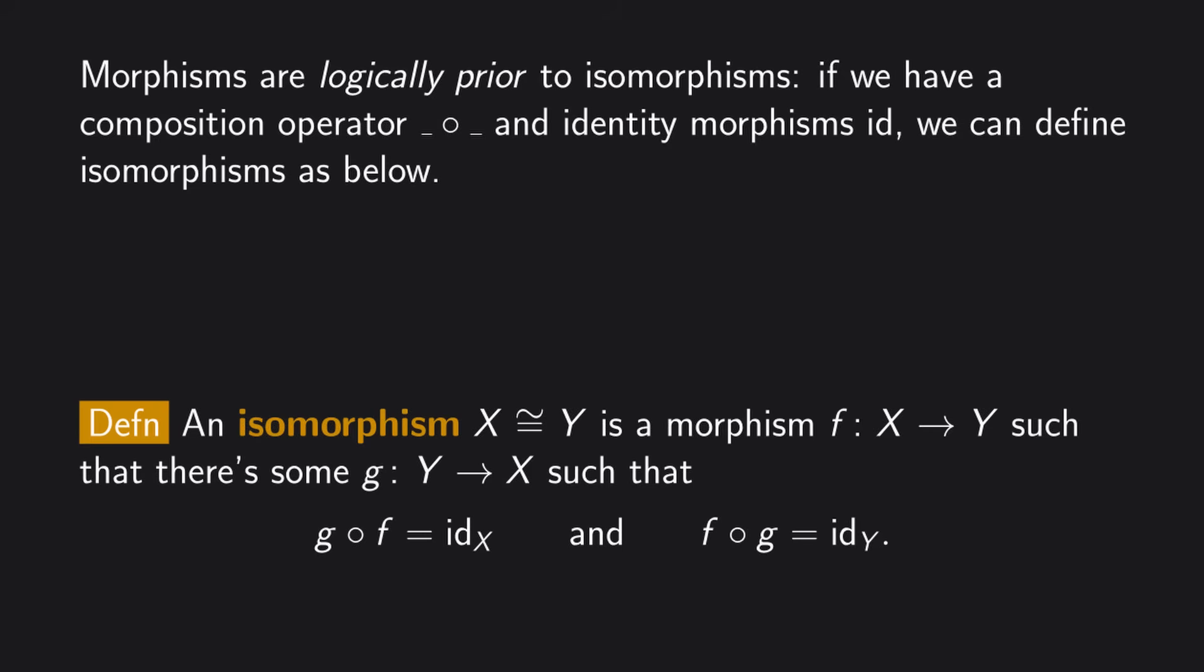This collection of data, a universe of structures with morphisms between them that compose and include the identity morphisms, that's what a category is, by the way.